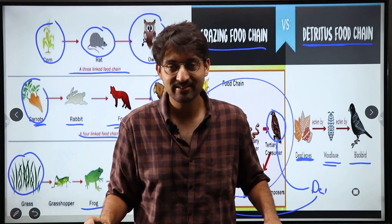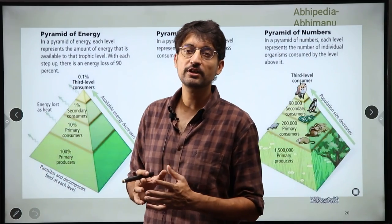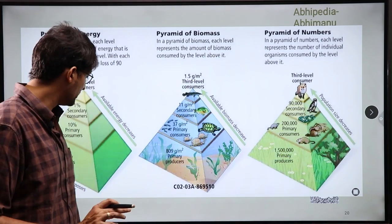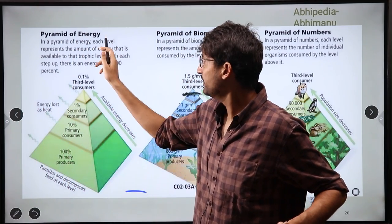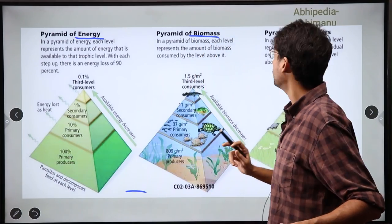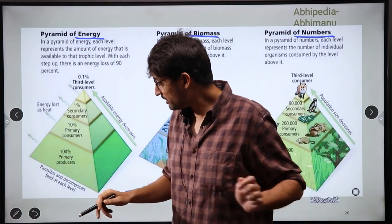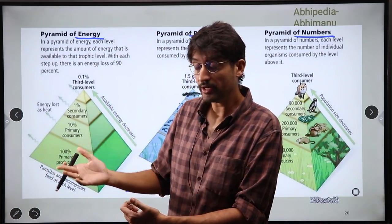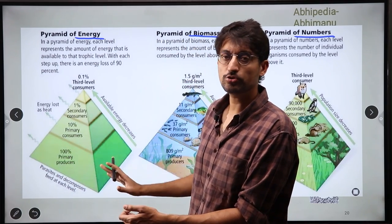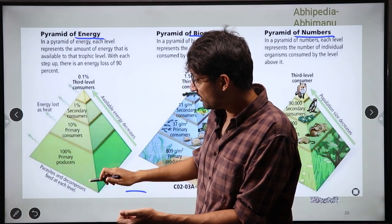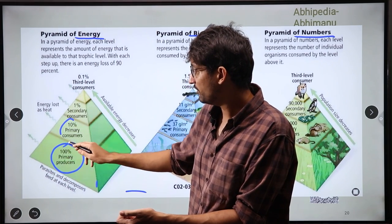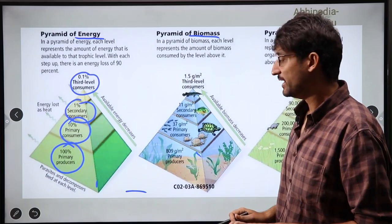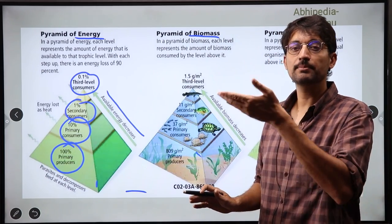Now let's talk about pyramids of energy. As I told you, as we go up the food chain there is always a decline in the percentage of calories. There are three types of pyramids: first energy, then biomass, and finally numbers. For the energy pyramid, energy cannot be created nor destroyed — it can only be transferred from one species to another, but there will be a 90% loss and only 10% will be transferred. So primary producers have 100%, then primary consumers 10%, secondary consumers 1%, and the third-level consumer even lower. Available energy decreases as we move up the food chain.